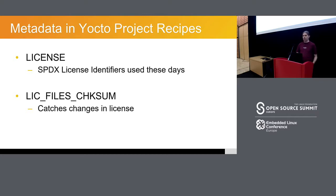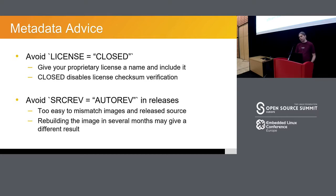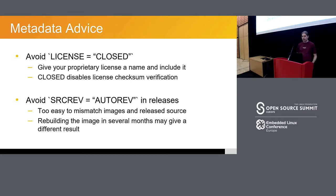You will get a warning that this has changed — you need to go and read it, see what the difference is, and update it. A bit of advice on these recipes: we do have this magic 'closed' as a license. I always say avoid this. If your software is distributed under a proprietary license, give it a name and include the license text in the layer. The 'closed' keyword disables that license file checks and verification. In a large enough organization, other teams can change the license for the tool — something previously proprietary may now be released open source, or something under a permissive license may acquire proprietary changes. You do want verification even if it's not coming from a third party.